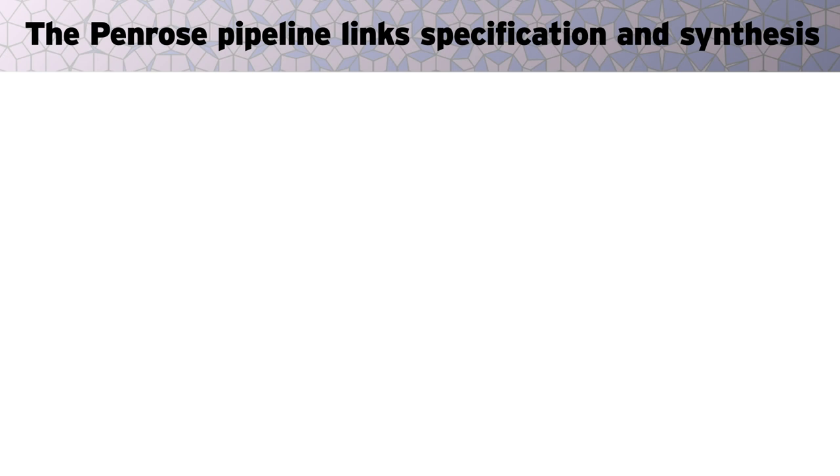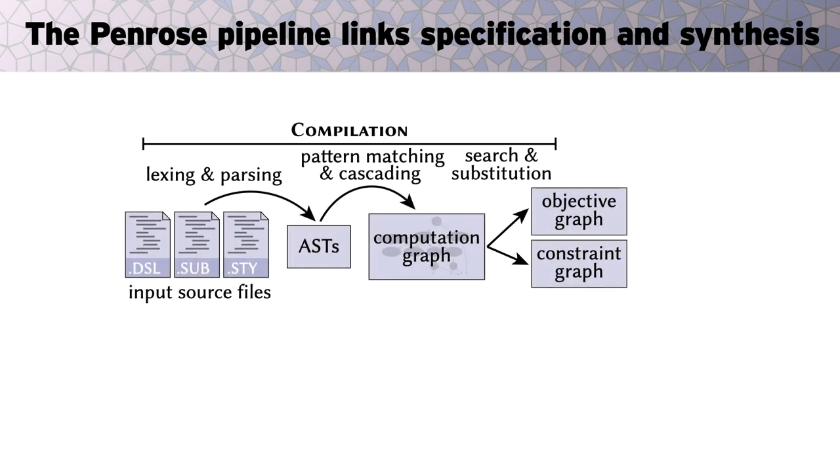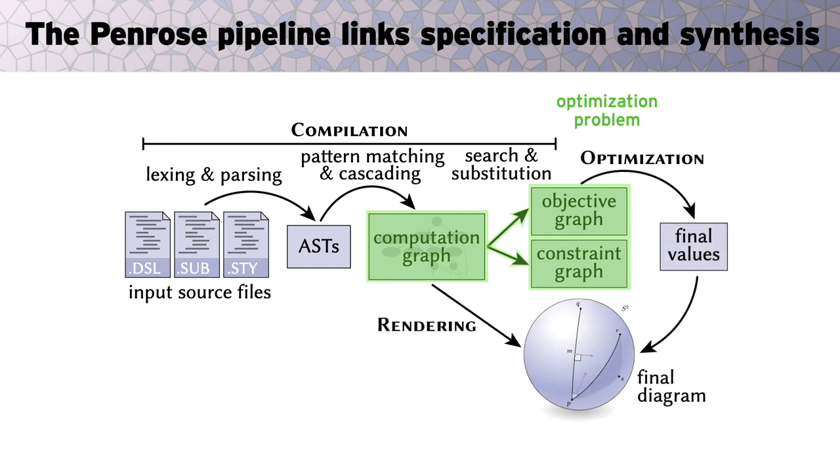So how do we turn this code into a diagram? The first step is to apply the mapping defined in our style program to the given substance code, which we do by lexing and parsing the input file, then pattern-matching and cascading on the abstract syntax trees. This process yields an optimization problem, described by a computation graph, an objective graph, and a constraint graph. We then solve this optimization problem for any unknown values, then output the final diagram. Let's take a look at each step in more detail.